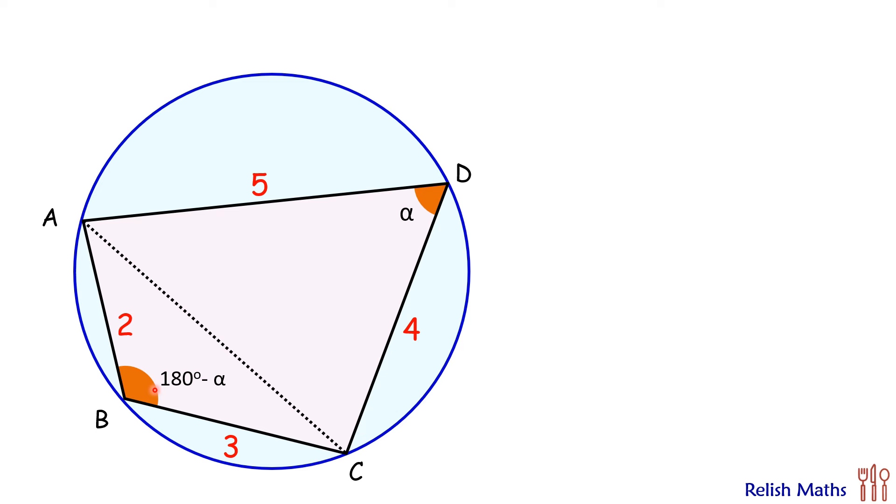To proceed further, we'll use the cosine rule, which states that in a triangle with sides A, B, and C: A² = B² + C² - 2BC cos A, where A is the angle opposite to side length A.